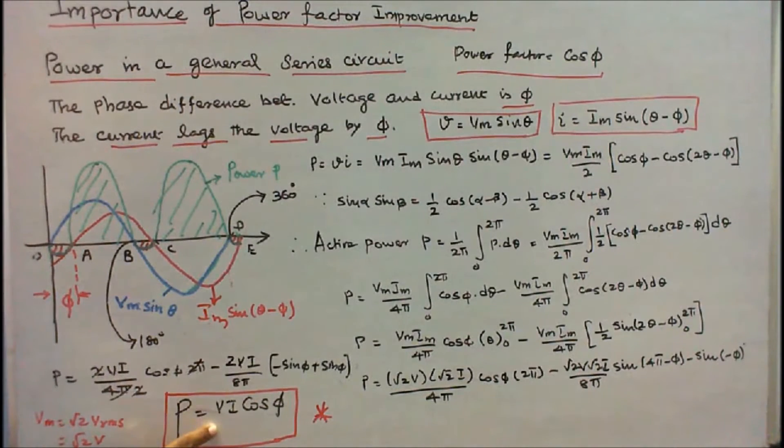V is the RMS voltage, I is the RMS current, cos φ is the power factor. φ is the phase difference between voltage and current.